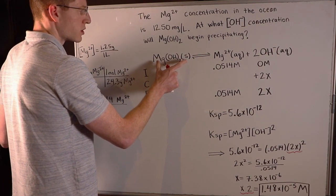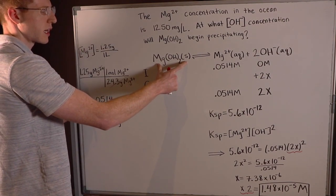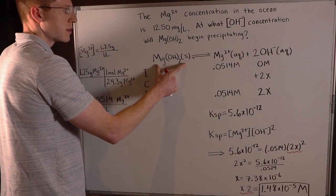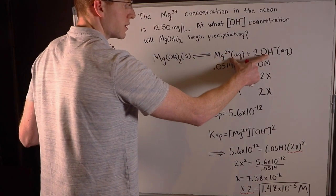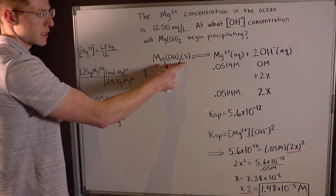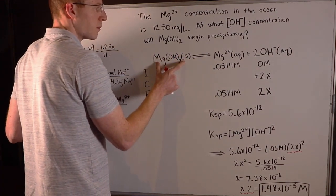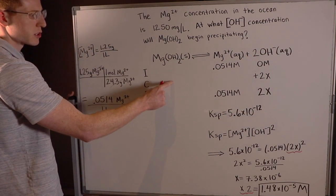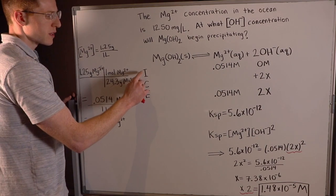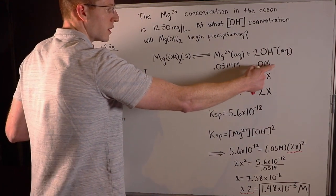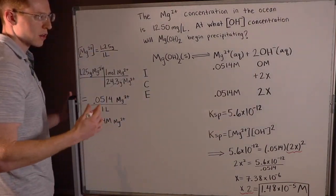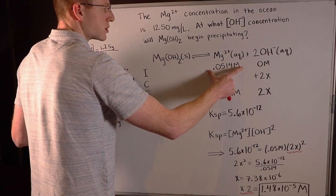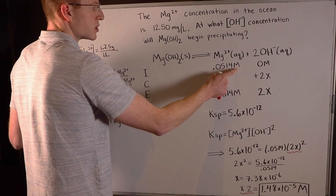We start with our solid reactant, magnesium hydroxide. Even though we're technically talking about precipitation — going from dissolved ions into our solid compound — it makes the math work out more easily if you always write the reaction with your solid compound dissociating into its ion products in the aqueous state. This is a pure solid, so we exclude it from our ICE table. For the initial row, we assume we started with no hydroxide since we weren't told about it, and we started with a certain amount of magnesium that we need to convert to molarity.